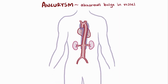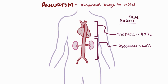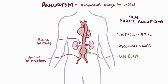Arterial aneurysms occur most commonly in the aorta, with about 60% of true aortic aneurysms happening in the abdominal section and about 40% in the thoracic section. Of all abdominal aortic aneurysms, about 95% are found just below where the renal arteries branch off, but above the aortic bifurcation. That's because there is naturally less elastin in the walls of this part of the aorta.